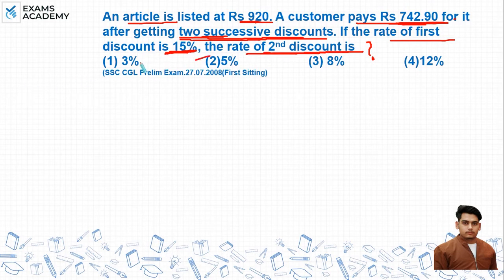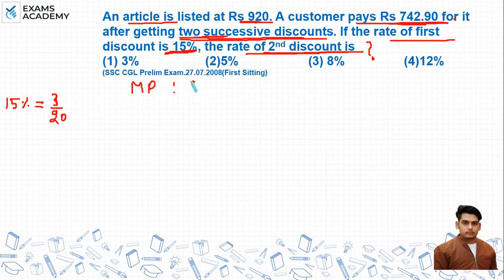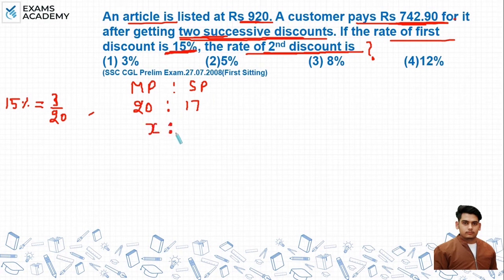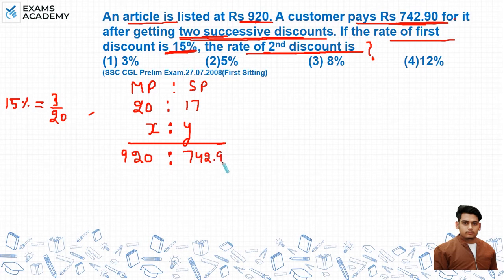The first discount is given as 15 percent, so its fraction is 3/20. If we look at the market price to selling price ratio: with a 15% discount, if market price is 20 units then selling price is 17 units. For the second discount, we take the ratio as x to y. The marked price is 920 rupees and selling price is 742.90 rupees.